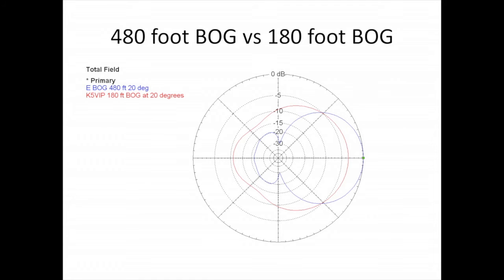I also had a 480 foot bog. And this compares my 480 foot bog to K5VIP's 180 foot bog. Notice that the 480 foot bog has more gain, maybe about 8 dB, and it has a little bit better front to back ratio. But basically both the antennas are directed. And the 480 foot bog was really optimum, I thought, for 160 meters.